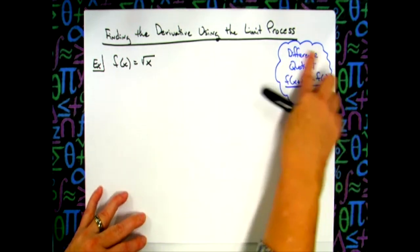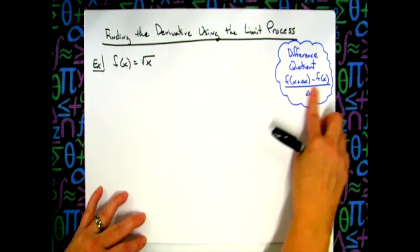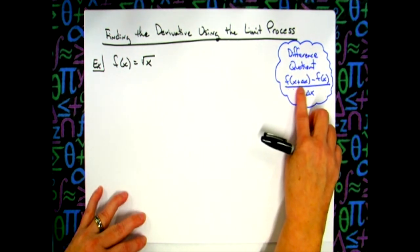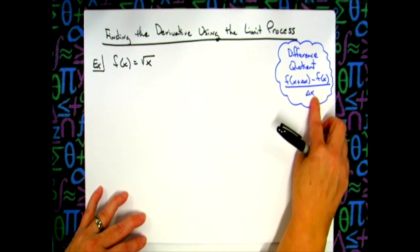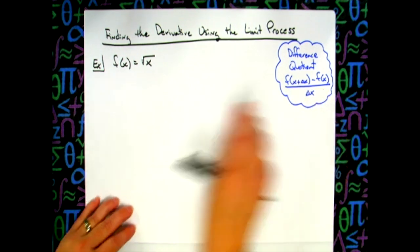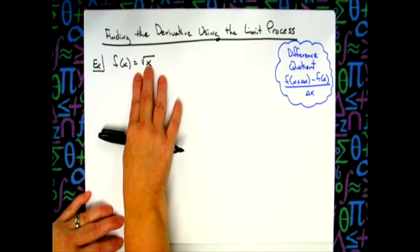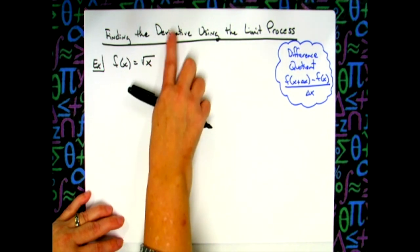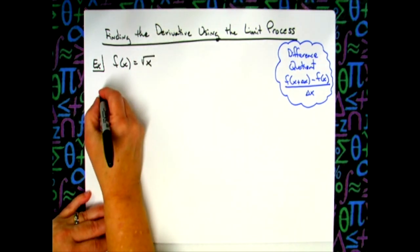Now to be able to do that, you've got to remember what your difference quotient is. I'm going to be using f of x plus delta x minus f of x all over delta x. So this is my original function. I am taking the derivative, so I'm going to start out with that notation.